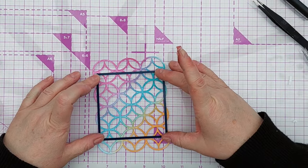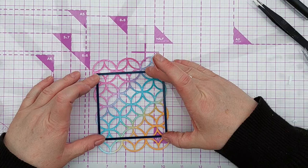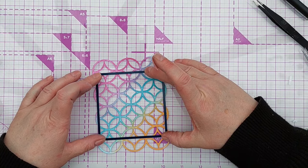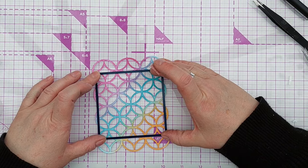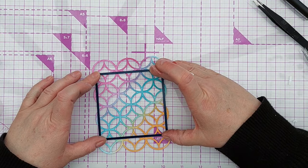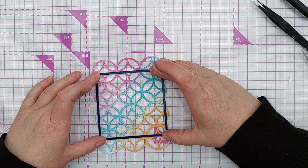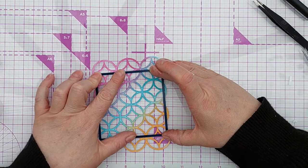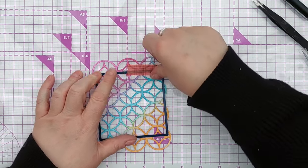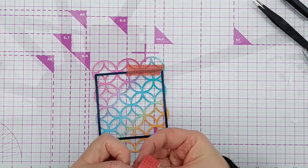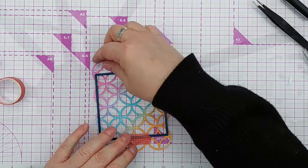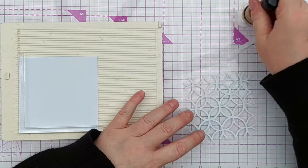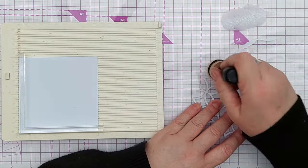For my second card, I decided to use my square die again to cut down the stencil mask that I'd used to blend the ink through. There's no point in throwing this away, it's got lovely bright vibrant colors on it from the ink and it can be used on a card. So this is your two for one, I used one DIY stencil and got two cards out of it.